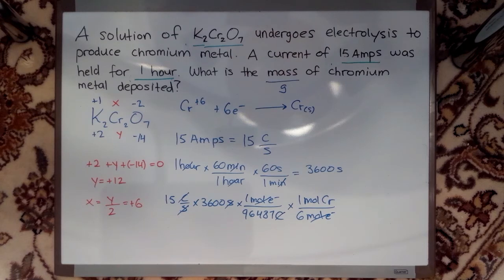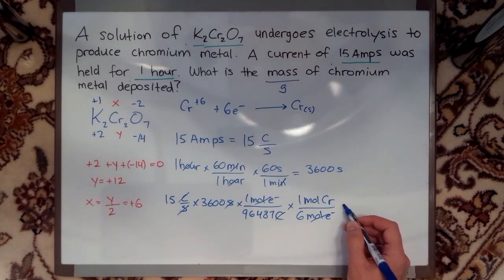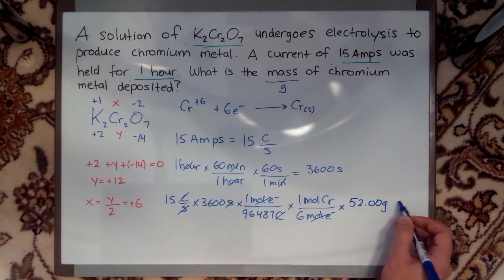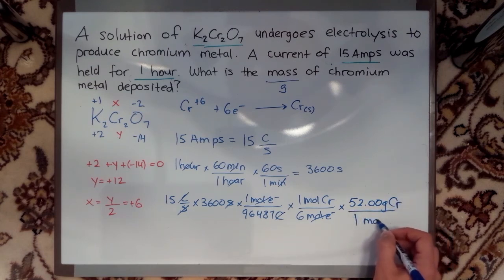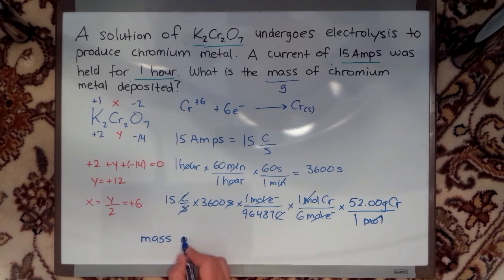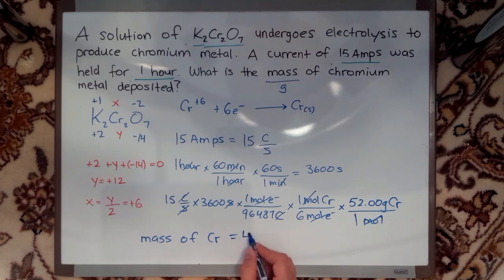Now I'm left with moles of chromium. How do I convert moles to mass? All I have to do is multiply by the molar mass of my chromium. My moles cancel out. All I'm left with is my grams. So I've solved for my mass of chromium, which is going to end up being, once you work it out, 4.85 grams.